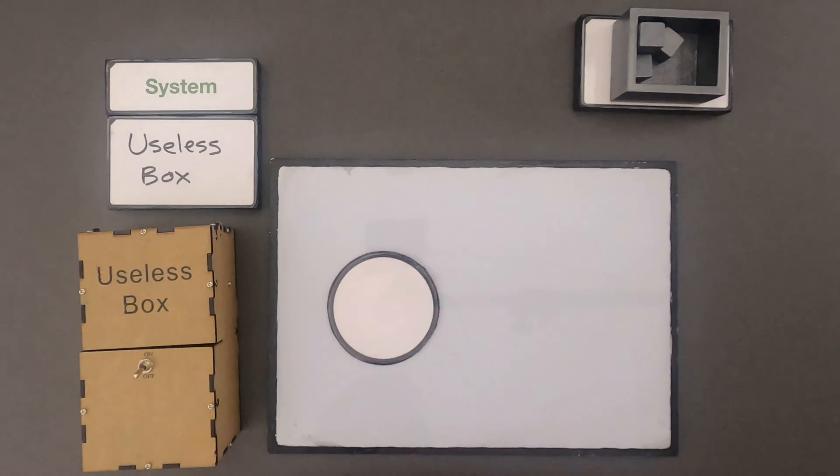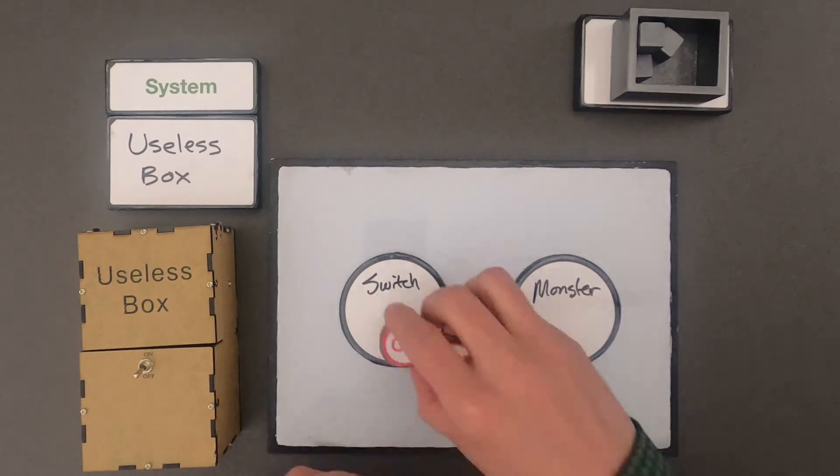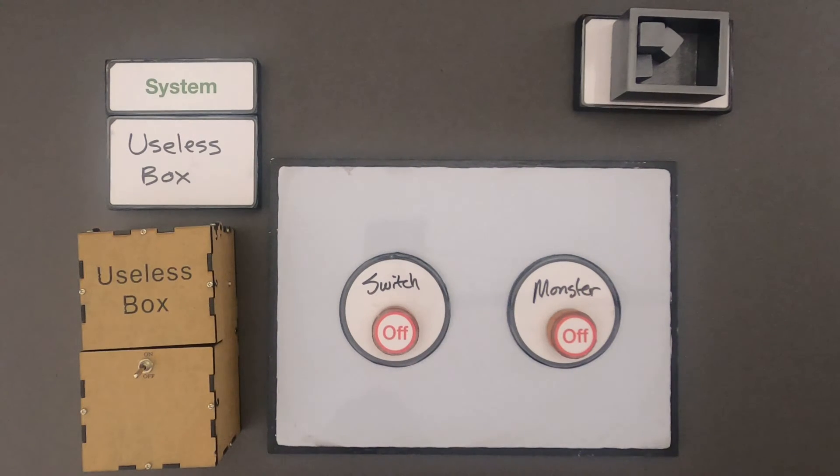I should define what are the important parts of the system before we try to simulate it. The two things that I see as being very important in this simulation would be the two things that I see at the beginning: the switch and then the mechanical monster. So they're both in an off position.